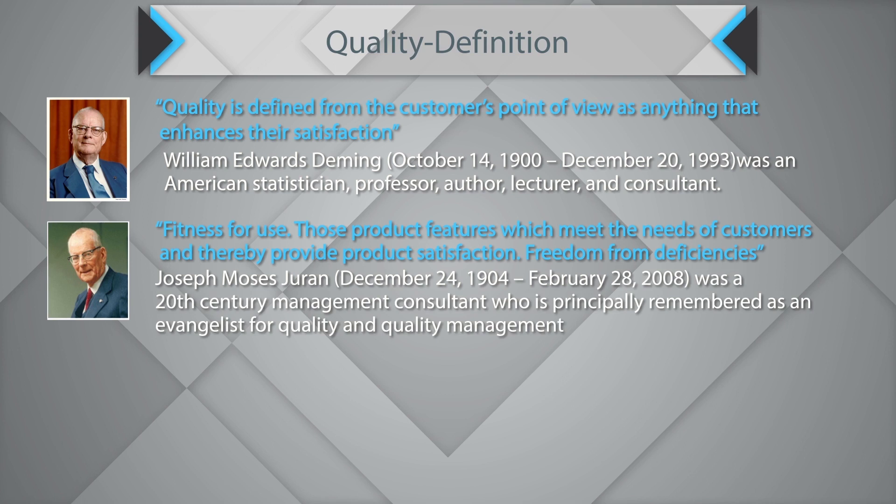I ordered a pizza because I wanted to eat it, so when I receive the pizza it should be as desired. Any product feature the customer requested must be ensured such that the product satisfies the customer, and such products are free from deficiencies. You must understand that customer needs could be stated or unstated, and you must devise systems and processes to meet such requirements consistently.